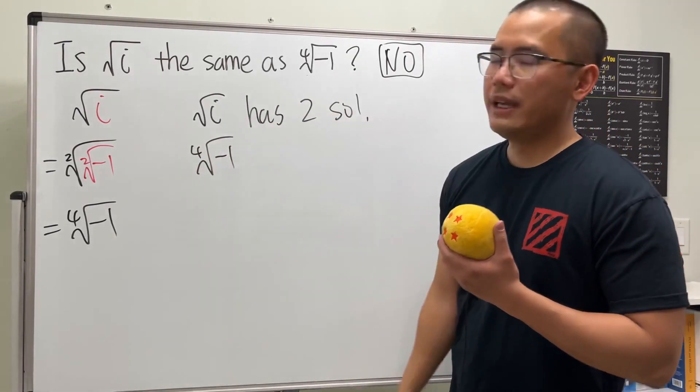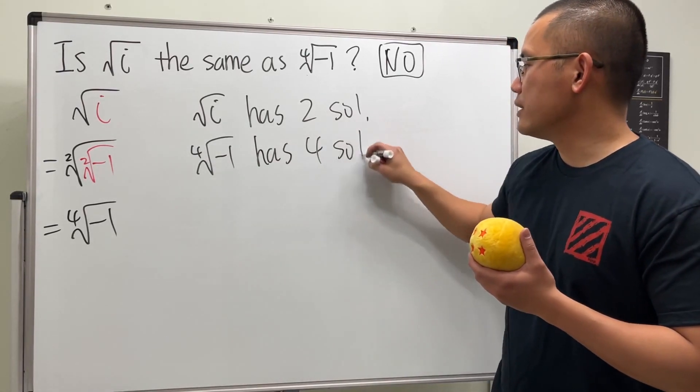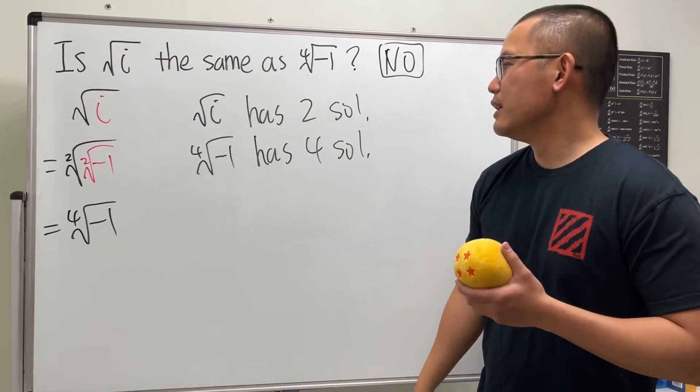And if you take a look at the fourth root of negative one, in fact this guy has four solutions, four answers or four outputs.